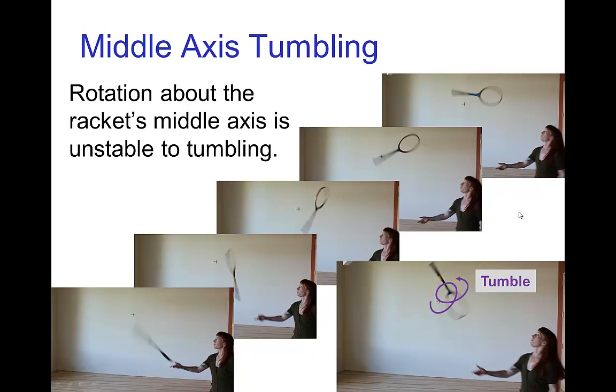By the way, this racket had no strings, so this has nothing to do with air resistance. It's entirely due to the shape of the object and the axis about which it's turning.